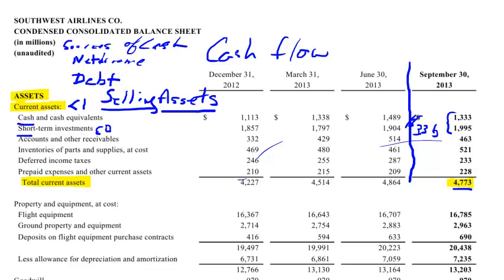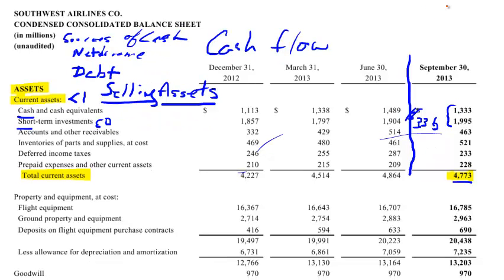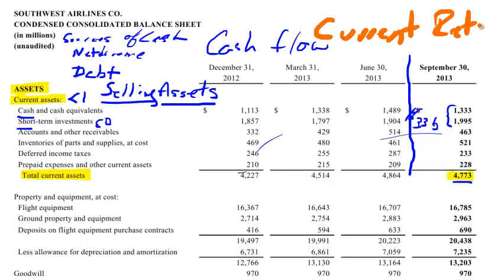In this video I want to talk about one metric that is used to help analyze the cash position of the company, and we'll use that statistic to compare Southwest's cash position to other airlines. The best place to evaluate cash is through the cash flow statement, but since we're on the balance sheet this is relevant to what we talked about in the last video. That measure is called the current ratio — it's simply the ratio of current assets to current liabilities.